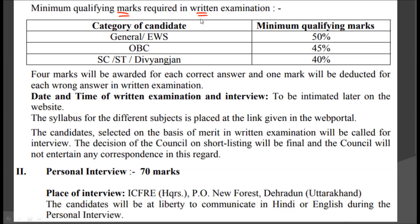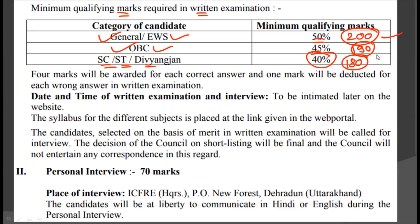The minimum qualifying marks in the written examination are: for the general candidate it will be 50%, that is out of 400 you have to get 200 marks. For OBC candidates it is 45%, and for SC, ST, and Divyang candidates it will be 40%. That means OBC candidates require 190 marks, and SC, ST, and Divyang candidates will require 180 marks.